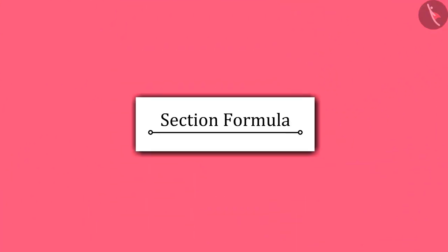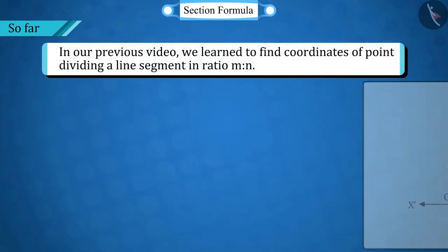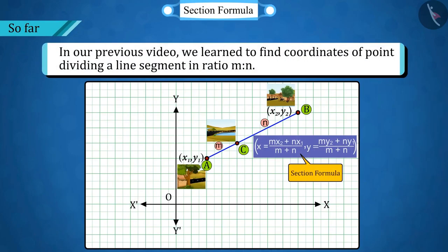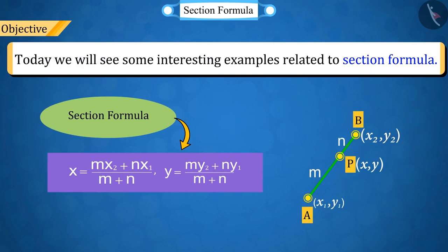You are all welcome to this video. In our previous video, we learned to find the values of the coordinates of point C internally dividing the line AB connecting two points A and B in M ratio N, called the section formula. Today we will see some interesting examples related to this concept.